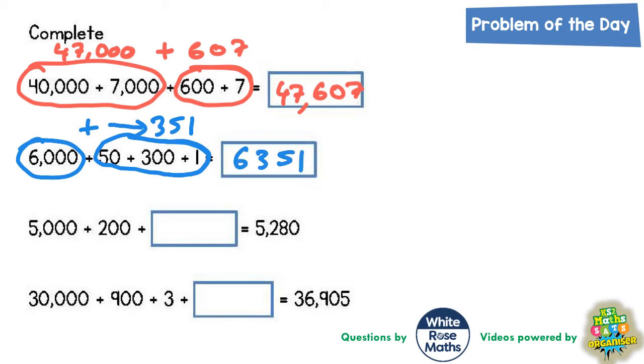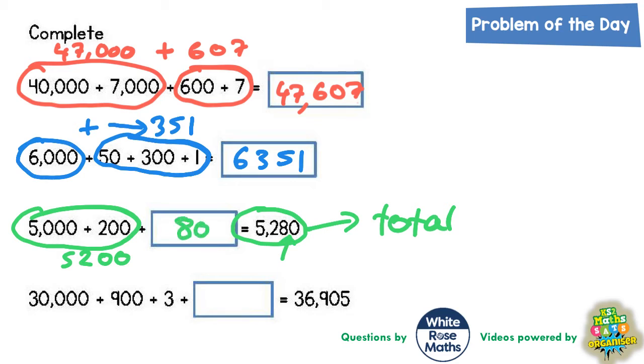For the third one, it's different because we're already told the answer. The total is 5,280, so we need to see what's missing to make the total. If we see what we've got so far, we have 5,000 plus 200, which is 5,200. We need to find the extra 80, so we put 80 in there. 5,200 plus 80 equals 5,280.